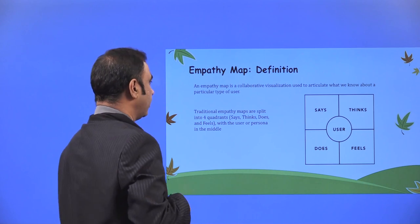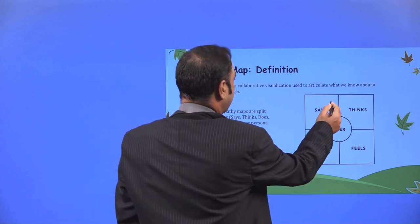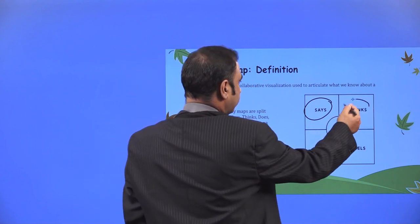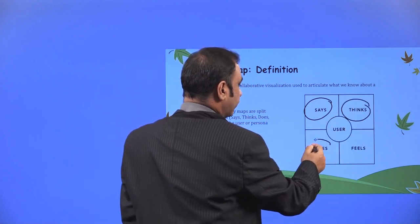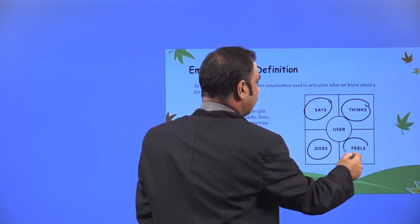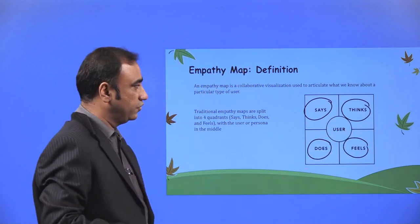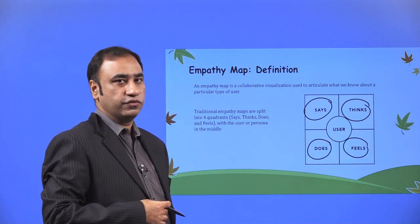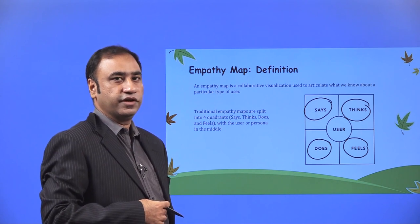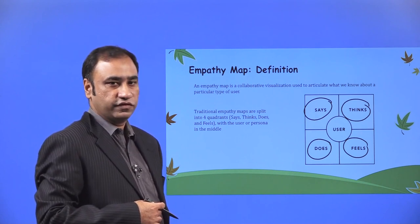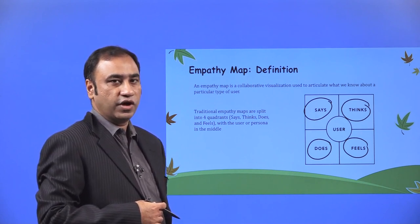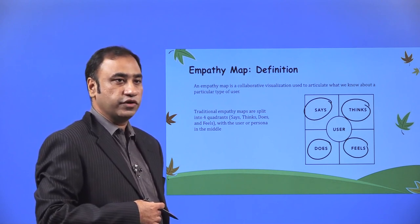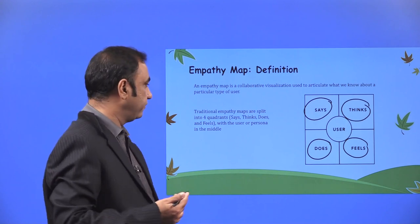What we are trying to understand about the user is what the user says, what the user thinks, what the user does, and how the user feels. We need to understand all these aspects about a user before even getting into the ideation process. Our objective is to know as much about the user to really understand what is the problem that we are going to define in the define phase.